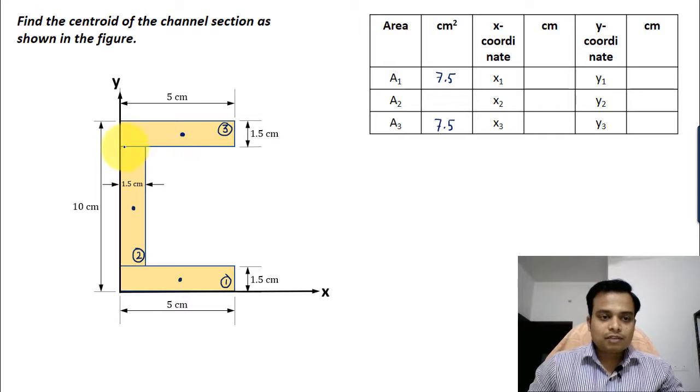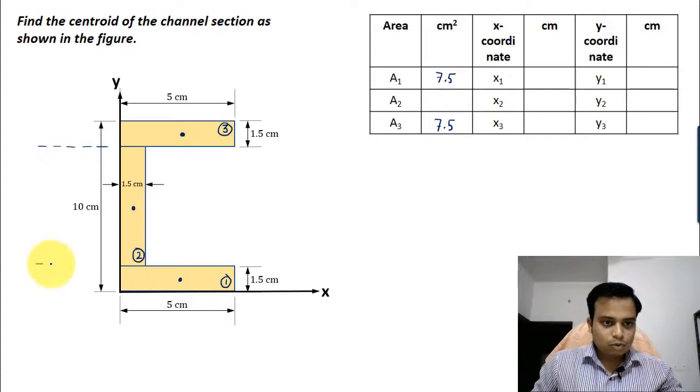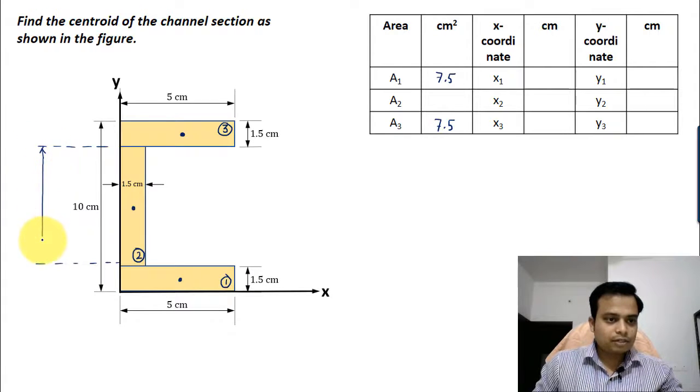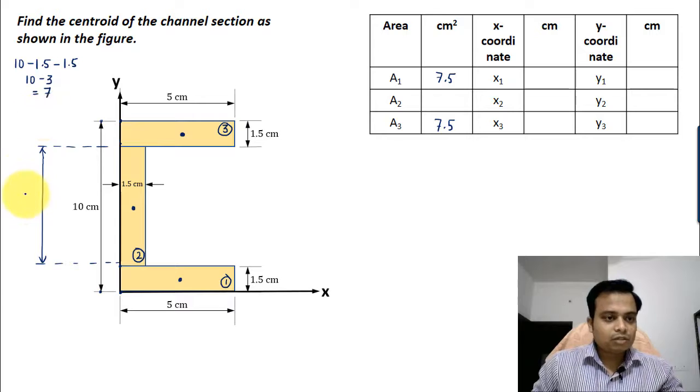Now as far as rectangle 2 is concerned, its width is known to us but its height is not known right now, but we can figure it out. From here to here it's 10, this distance is 1.5, and this distance is 1.5. So essentially you have 10 minus 1.5 minus 1.5, and that's 10 minus 3, which is 7. So this distance is 7.